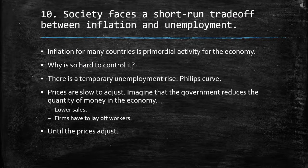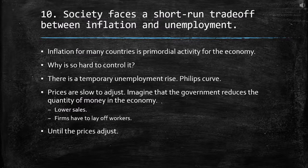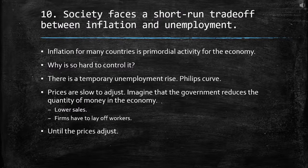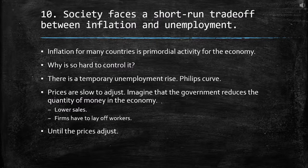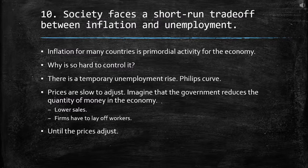The tenth principle is that society faces a short-run trade-off between inflation and employment. Reducing inflation is the primary goal for many countries' economies, but why is it so hard? Because there is a temporary unemployment rise, described by the Phillips curve. It says that prices are slow to adjust. Imagine the government reduces the quantity of money in the economy — people on average have less money, so they buy less, leading to lower sales. Once sales fall, firms have to lay off workers, until prices adjust in the medium or long run.